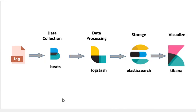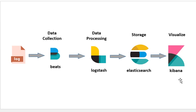On the next slide we have a more visual representation of the whole stack. The data source is the log source, and Beat collects the logs and sends them to Logstash. Logstash is a data processor which processes the data and sends it to Elasticsearch for storage. Kibana is where we visualize the data, create different kinds of dashboards, and see the whole infrastructure in a single page.